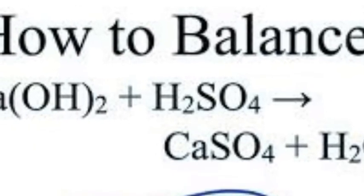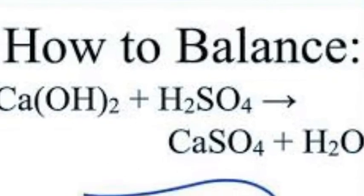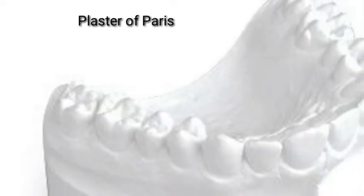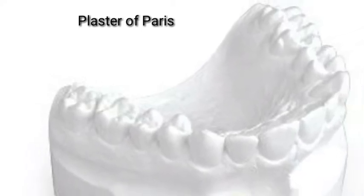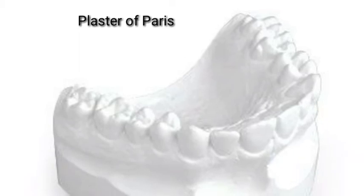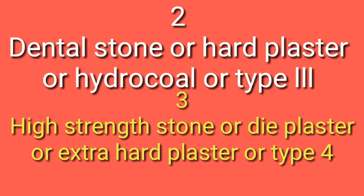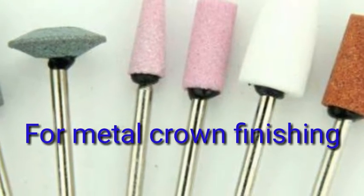Number two: dental stone, also called hard plaster, hydrostone, or Type 3. Number three: high strength stone, also called die stone, extra hard plaster, or Type 4. We use these stones for making finishing stones — for example, porcelain finishing stones, acrylic teeth finishing stones, and metal crown finishing stones.